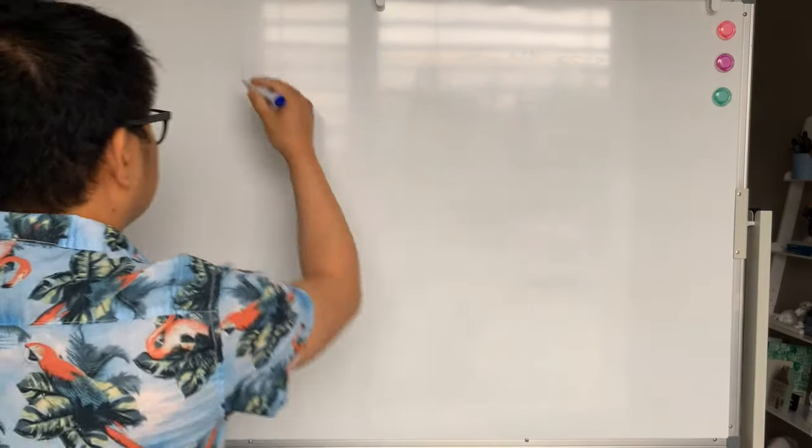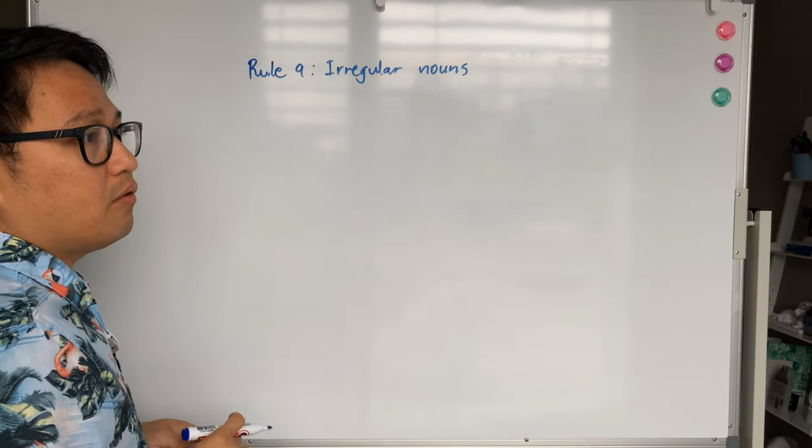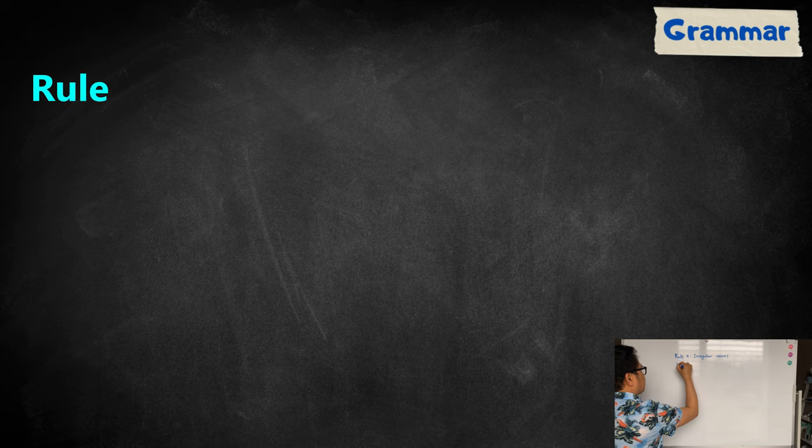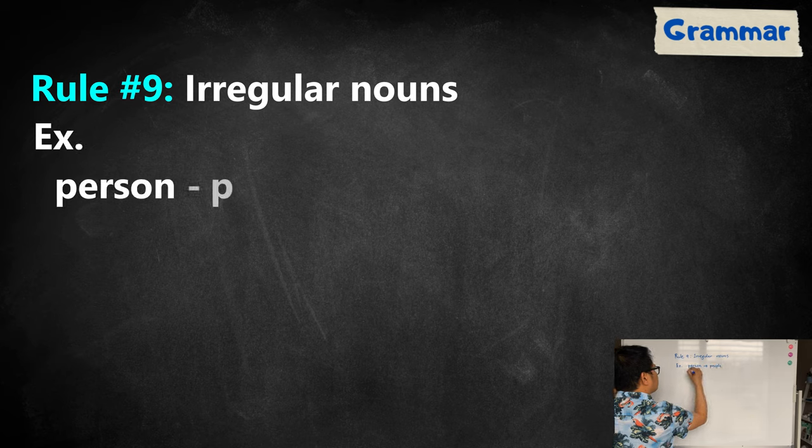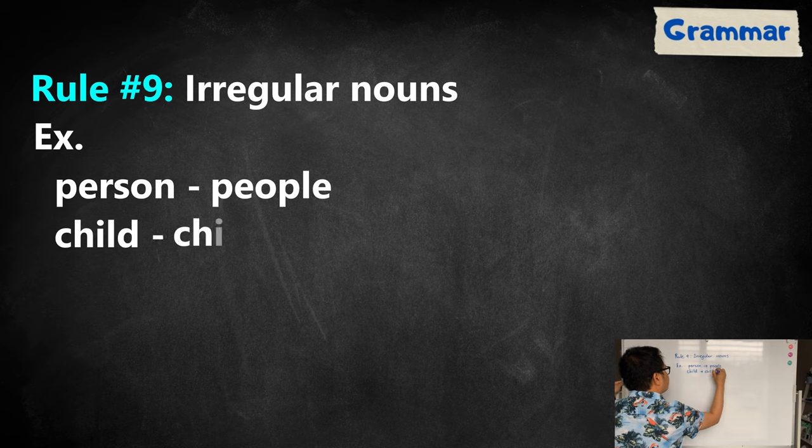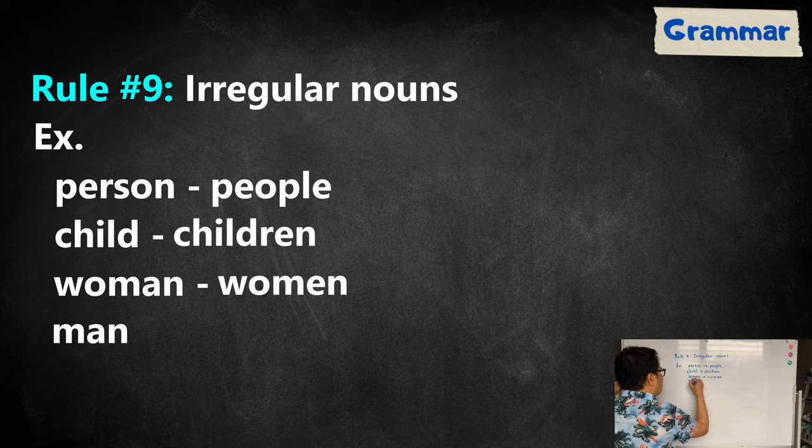For rule number nine, we call this irregular nouns. Irregular nouns because they have different form of plural nouns. For example, person will become people, child will become children, woman will become women, man will become men.